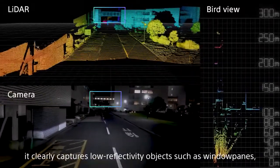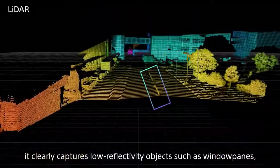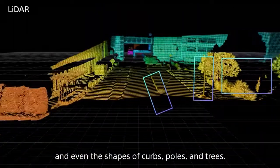At night, it clearly captures low reflectivity objects such as window panes and even the shapes of curbs, poles and trees.